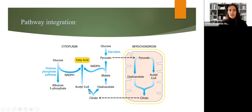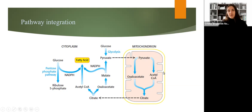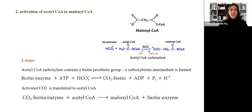To summarize: citrate moves from mitochondria to cytosol carrying acetyl-CoA. NADPH is provided by the pentose phosphate pathway. The oxaloacetate produced from citrate when acetyl-CoA is released can generate malate and pyruvate, and this process also leads to production of NADPH. Then pyruvate can return to the mitochondria and lead to further production of acetyl-CoA.